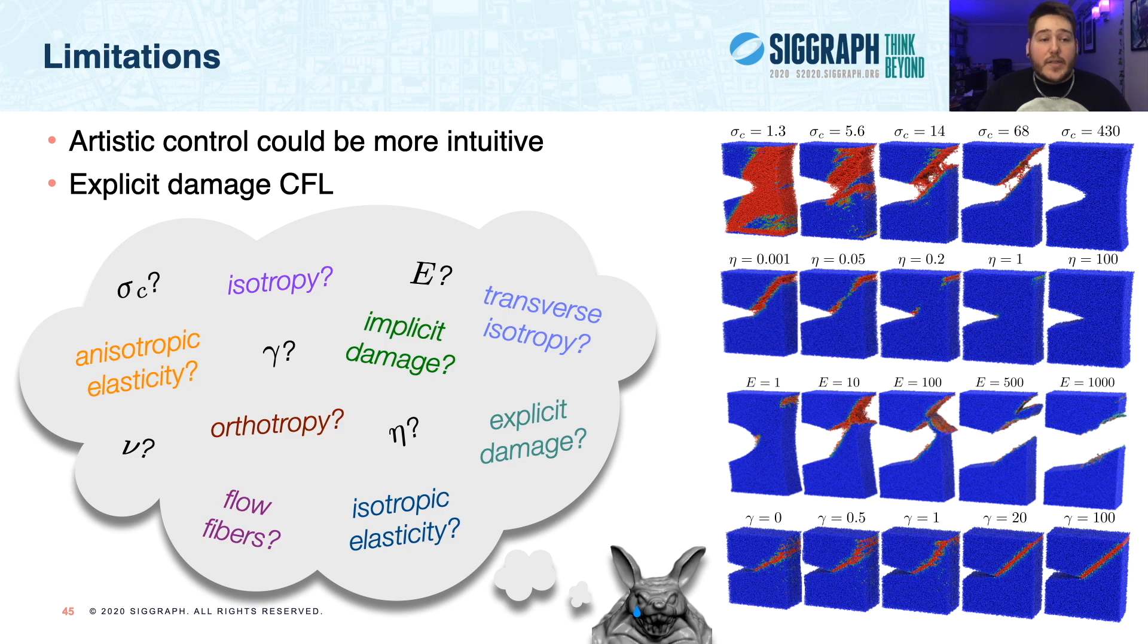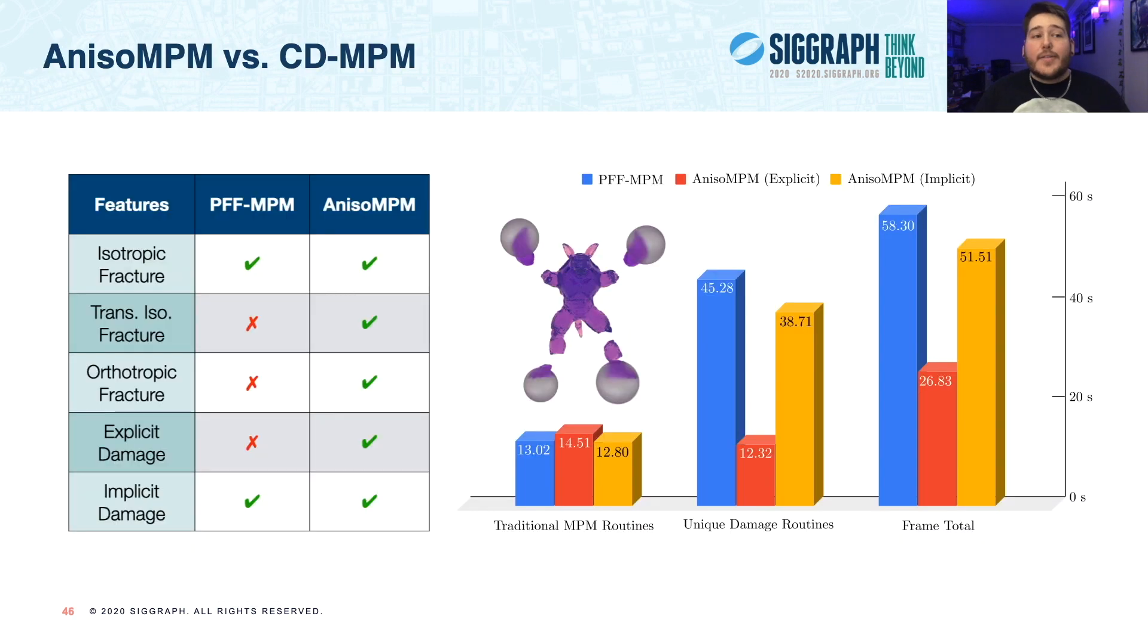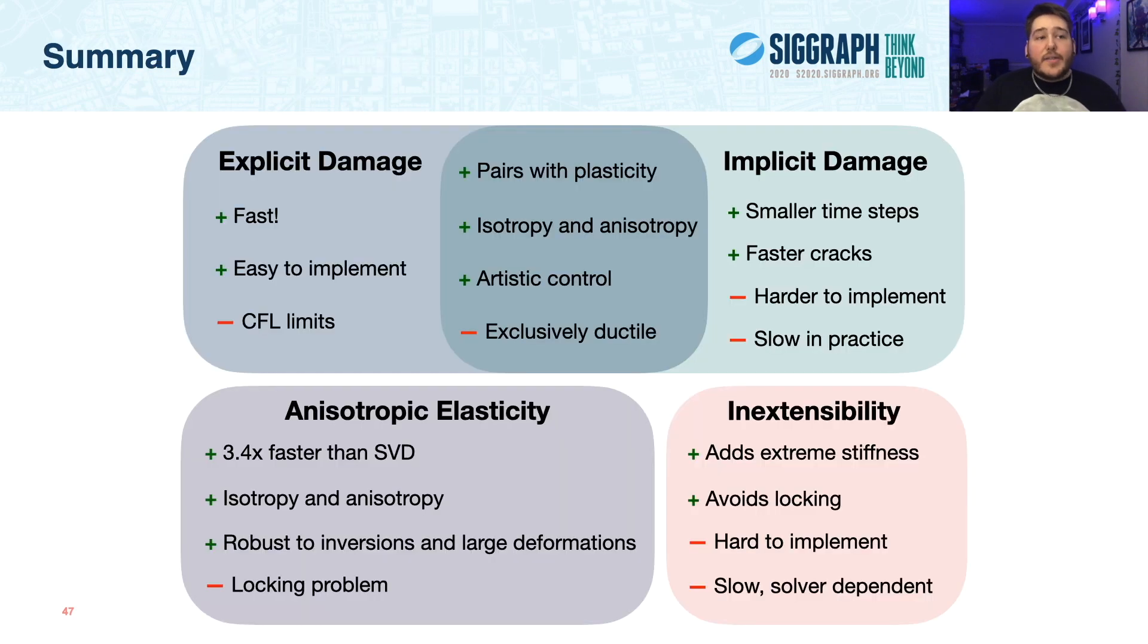So now let's compare anisompm with CDMPM to see how we've improved on last year. Most notably, anisompm models not only isotropic fracture, but also various modes of anisotropic fracture as well. And excitingly, we also introduce an explicit damage discretization for significant computational improvements. As you can see in the graph at right, implicit anisompm is slightly faster than PFFMPM, but even better, explicit anisompm gives significant speed-ups, and as we see in the breakdown, it adds very little computational overhead to the MPM pipeline.